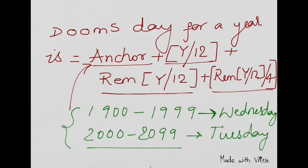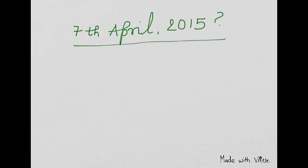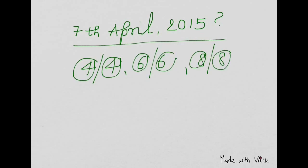Let's take an example: find the day on 7th April 2015. As you know from the reference 4/4, 6/6, 8/8, fourth April is one of our references. The closest number from seven is four.